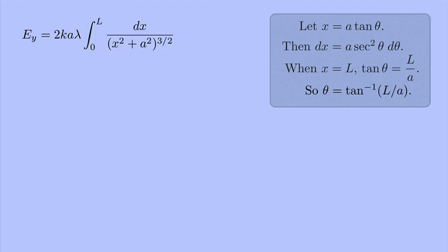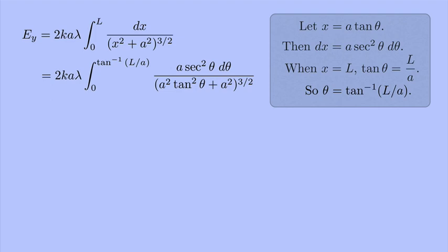Now I'm ready to plug into the integral. It looks messier, but it actually is easier to work with. Because if you look in the denominator, I have an a squared that I can factor out. And then I have tan squared theta plus 1. But tan squared theta plus 1 is the same thing as secant squared theta.